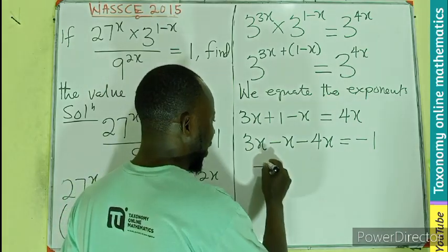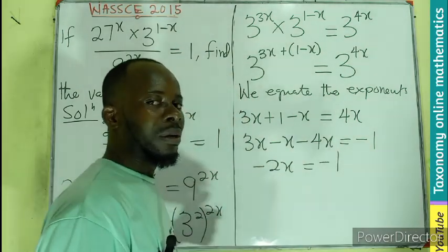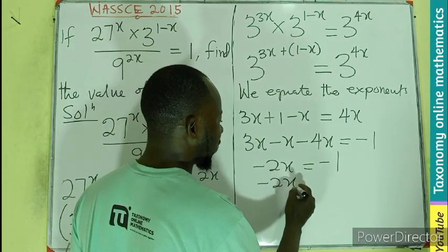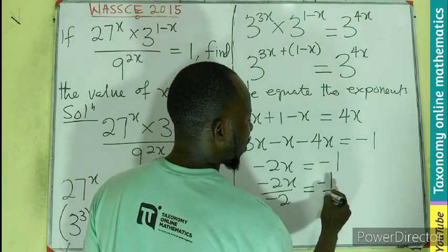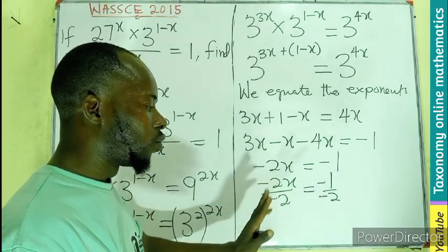So I will be left with -2x equals -1. But I am looking for a positive x. So we have -2x divided by the same coefficient, dividing both sides by the same coefficient.